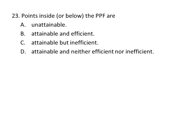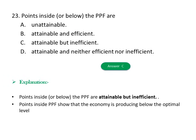Question twenty-three: Points inside or below the production possibility frontier are: A) Unattainable, B) Attainable and efficient, C) Attainable but inefficient, D) Attainable and either efficient or inefficient. The answer is C, attainable but inefficient. Points inside the production possibility frontier show that the economy is producing below its optimal level.